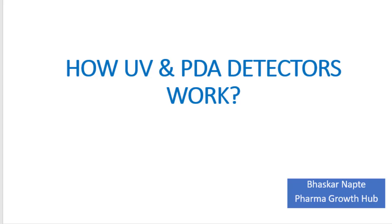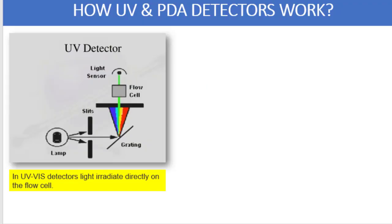Let us first begin with the discussion on the UV detector working principles. You can see in the diagram that there is a lamp, slit, diffraction grating, another slit, then there is a flow cell followed by the light sensor. This is the overall construction or the components of the UV detector.